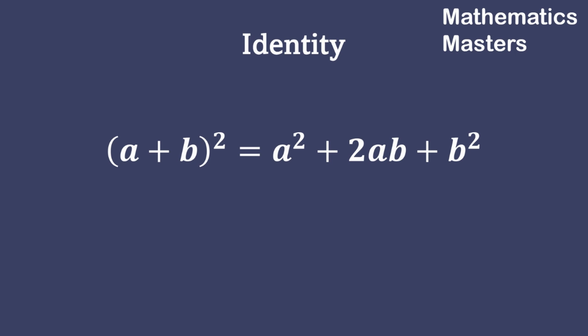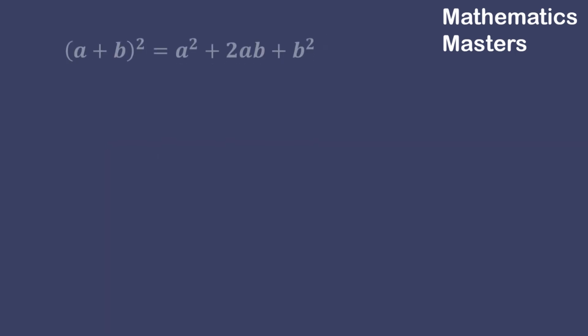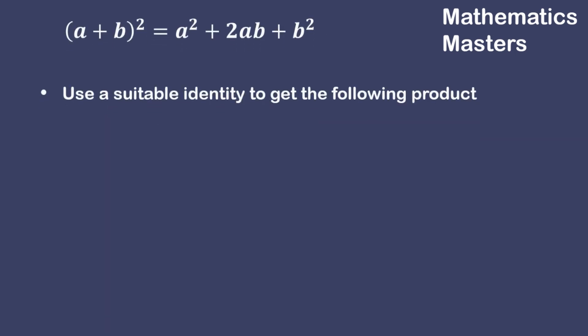Let us try to understand this identity with a question. Here is a question on your screen: use a suitable identity to get the following product. The product is 2y plus 5 multiplying with itself, 2y plus 5.